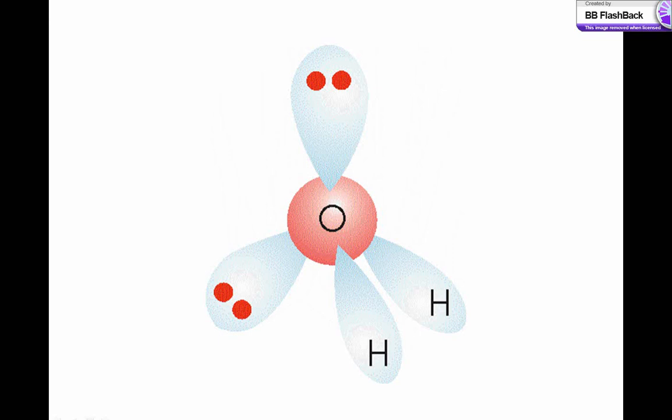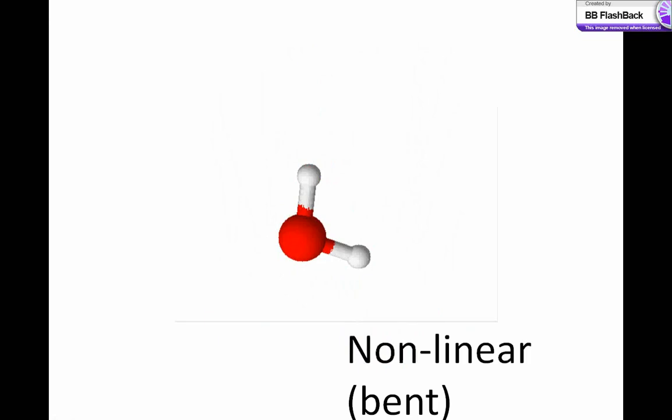The bonding and non-bonding electron pairs arrange themselves like this. This results in an arrangement of atoms like this. The shape is non-linear, or bent.